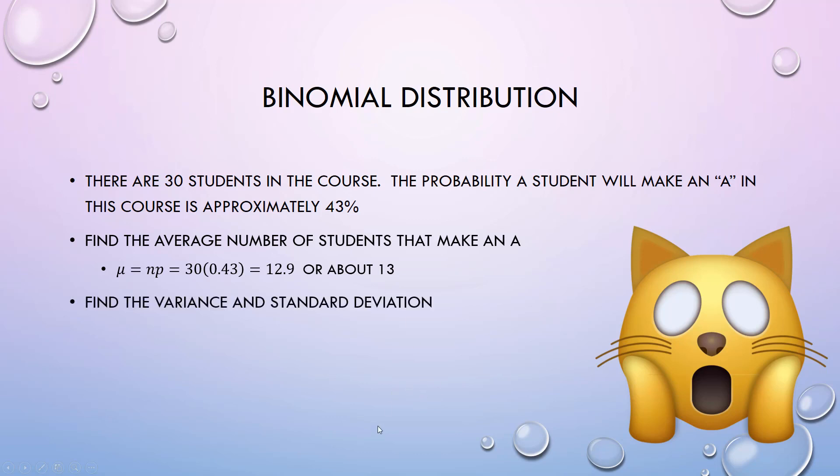Find the variance and standard deviation. This one's a little easier than just the discrete distribution, because this one you just multiply n times p times q. How did I get q? One minus p. And then how do I find the standard deviation? I square root.